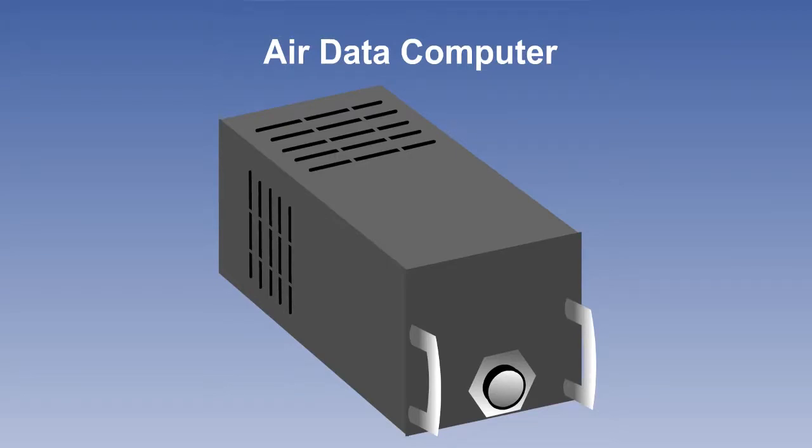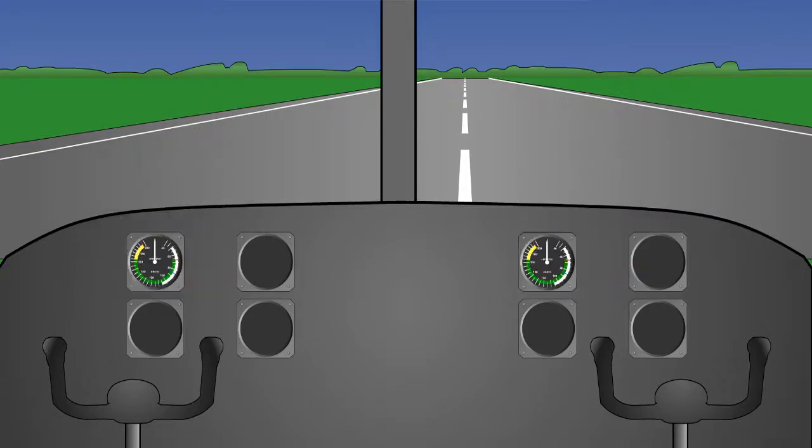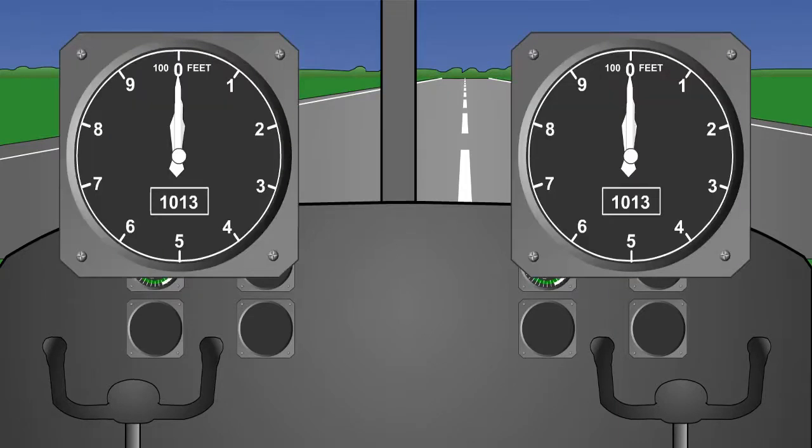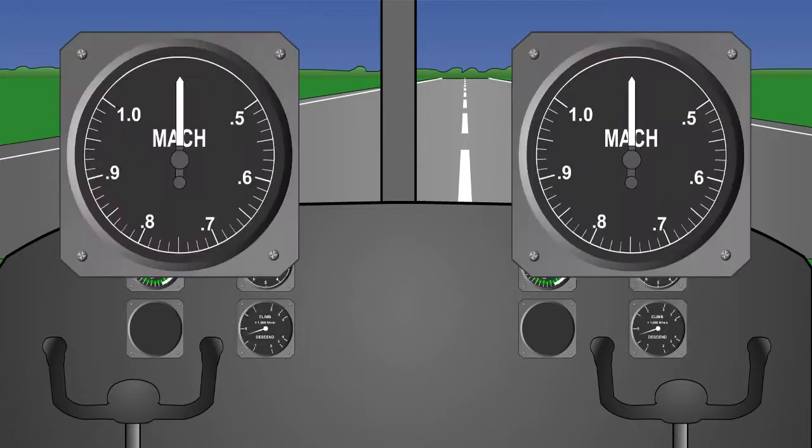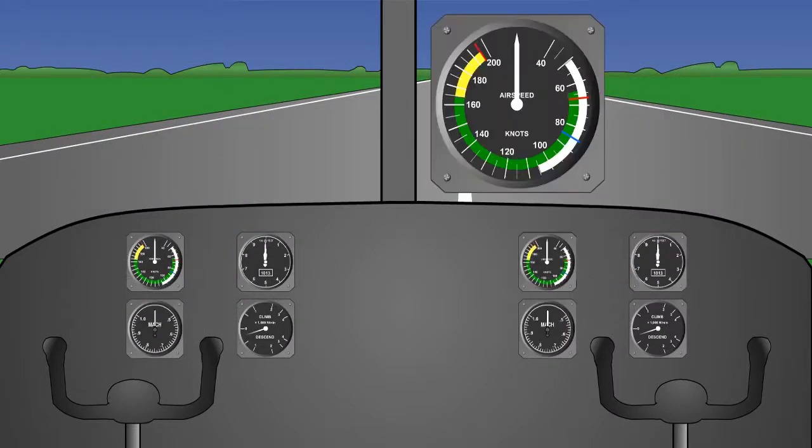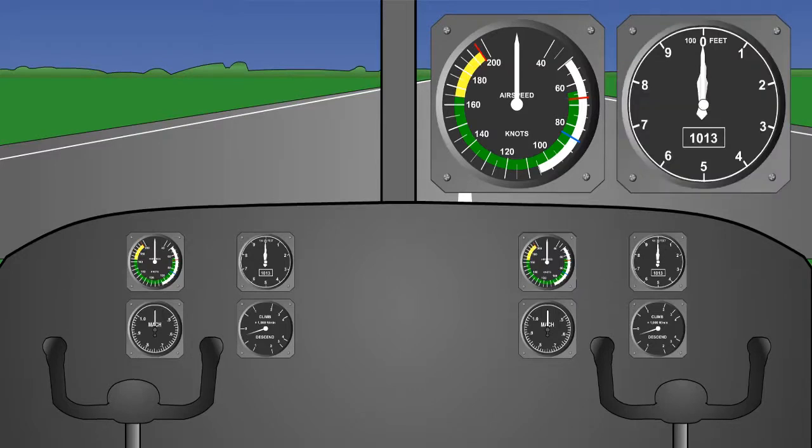Until the 1960s or 70s, an airliner would have had, for each pilot, an airspeed indicator, an altimeter, a VSI, and a Mach meter. Additionally, there would have been a standby ASI and a standby altimeter, possibly in the flight engineer's station.